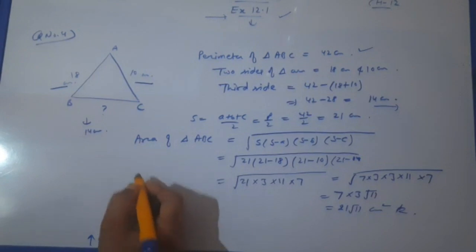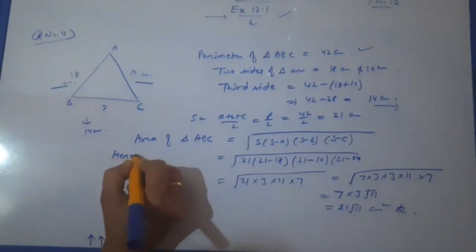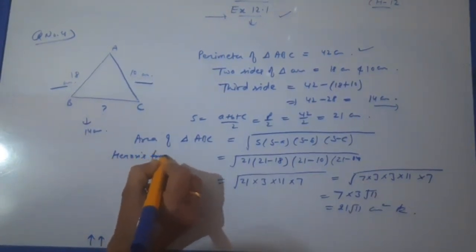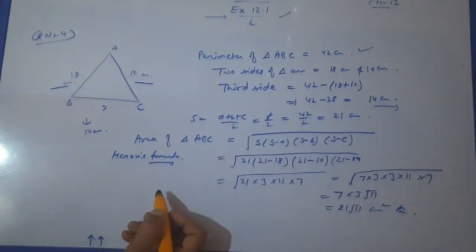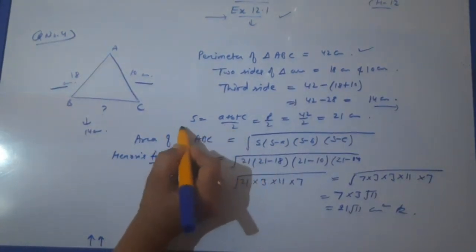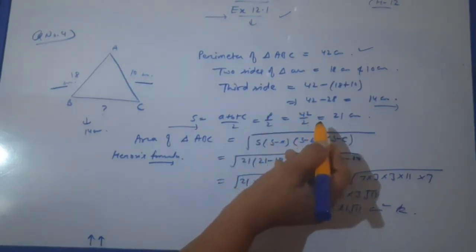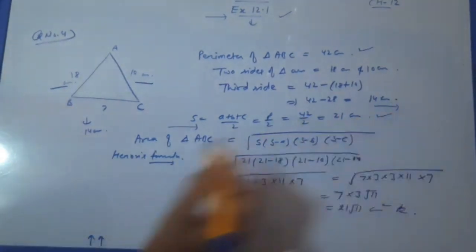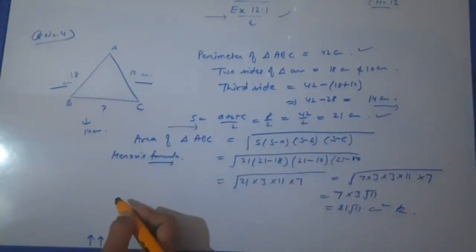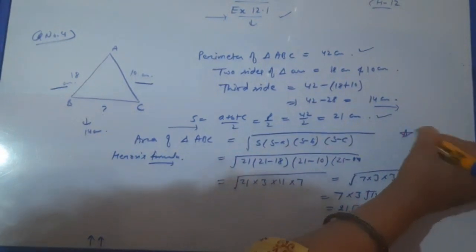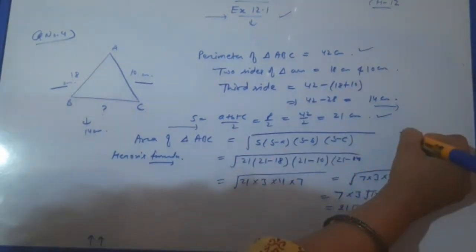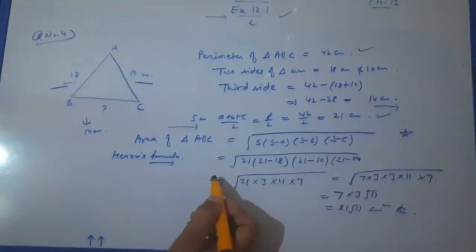For that, we will use Heron's formula. We have to find S. What is S? That is perimeter by 2, or half the perimeter. That is equal to 42 / 2, and that is equal to 21 centimeter. Now, what is Heron's formula? You know it better because we have applied it many times in this exercise.